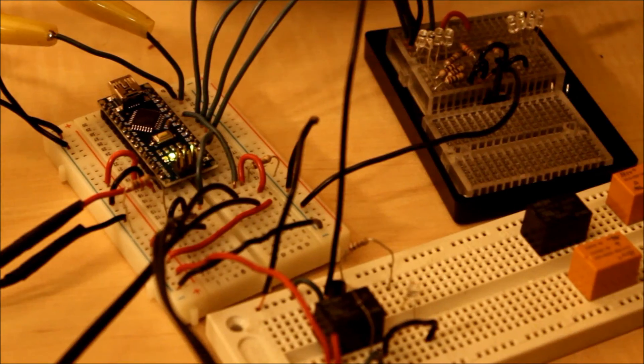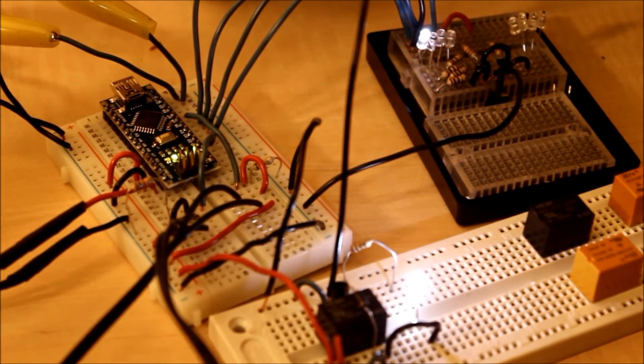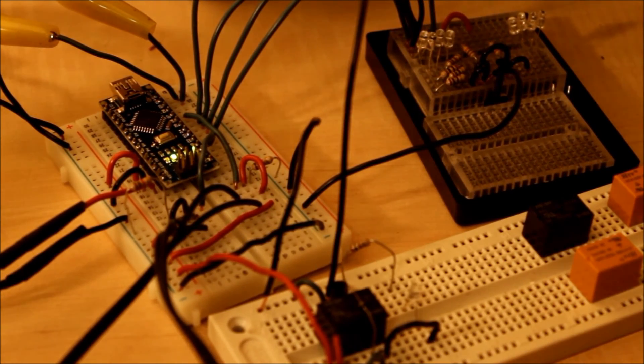The igniters are going to require 12 volts, and the Arduino only runs on five. So I'm having to set up a whole bunch of relays to control that sequence.